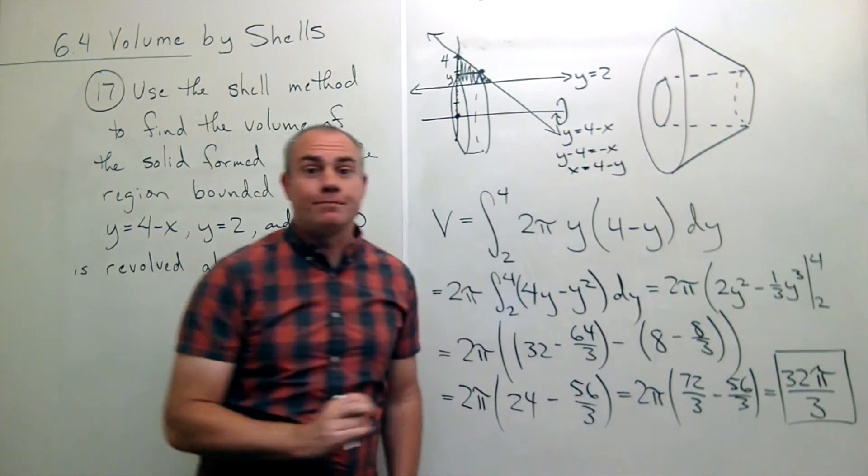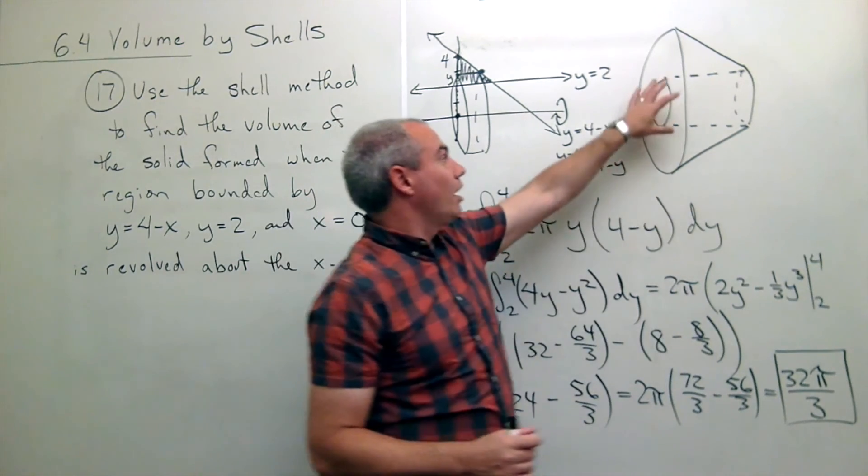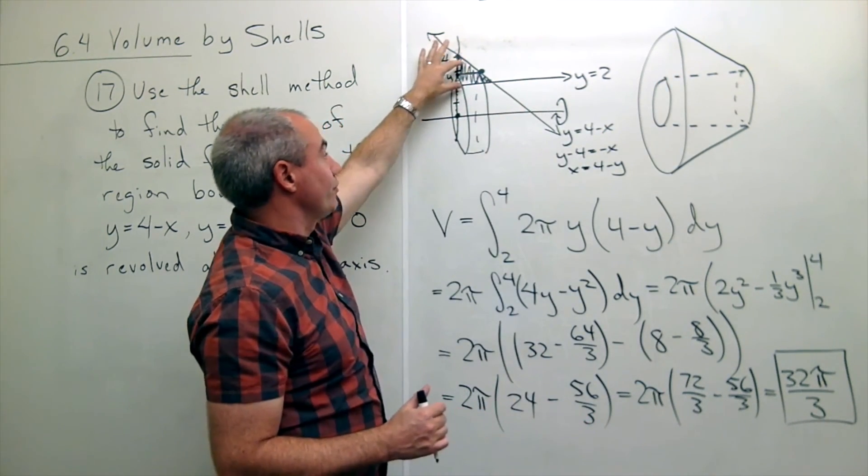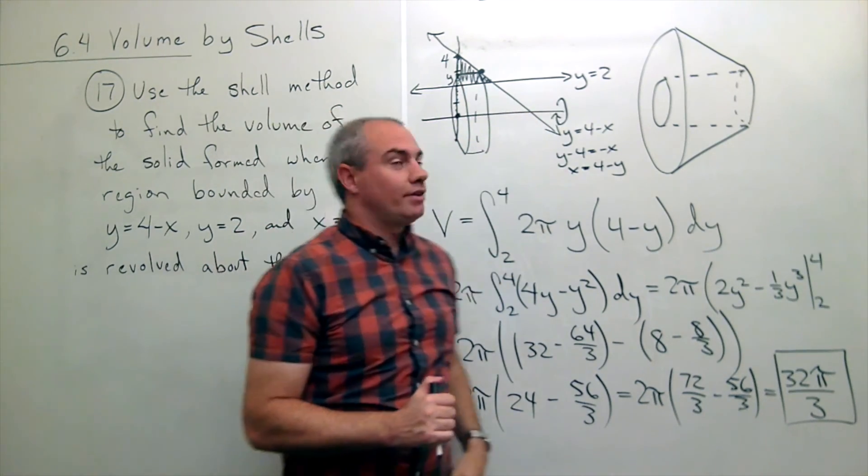is thirty-two pi over three. And that would be the volume of this shape that we get when we revolve this little region about the x-axis.